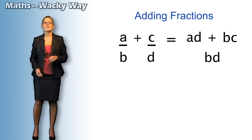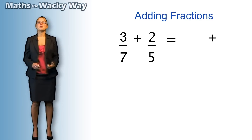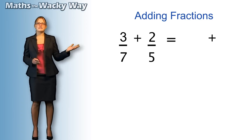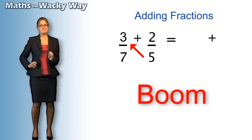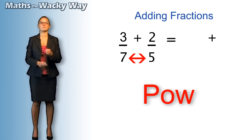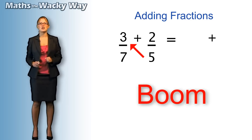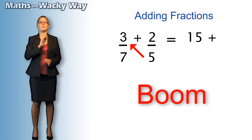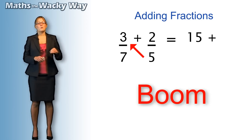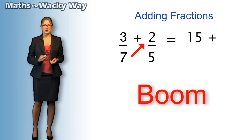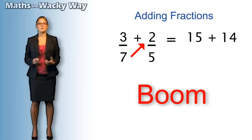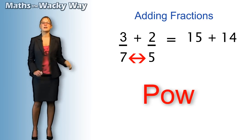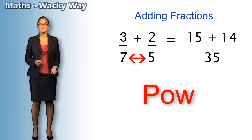Let's put some numbers into that. Let's take three sevenths plus two fifths. I've left some gaps where your answers will go. So we're going to be booming, and then powing on the bottom. The first boom will be three times five — fifteen. That will go in that top box as shown. We're then going to boom again this way: seven times two is fourteen. That joins the fifteen on the top, and then we're going to pow on the bottom: seven times five, which is thirty-five.